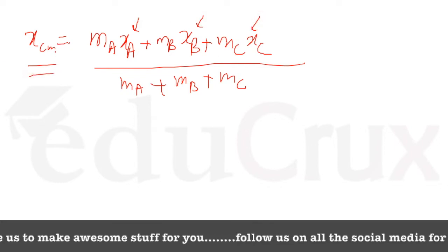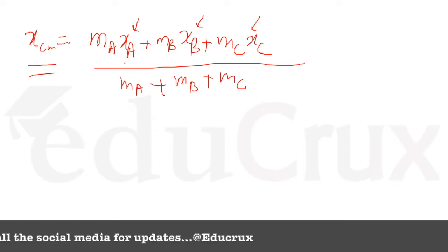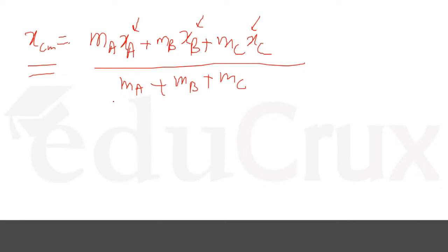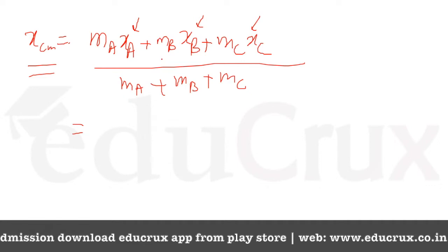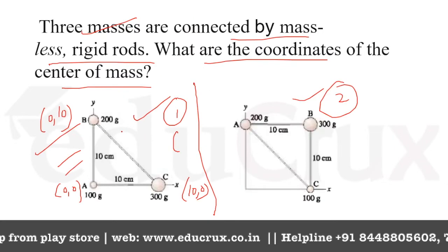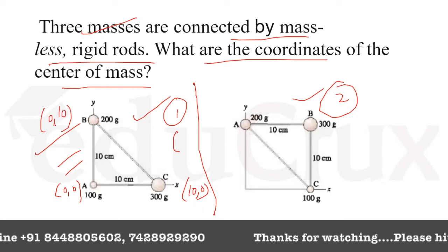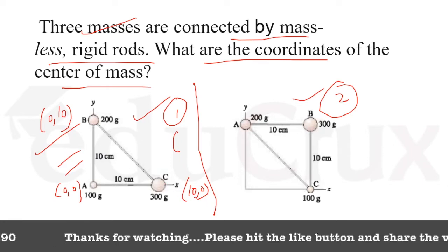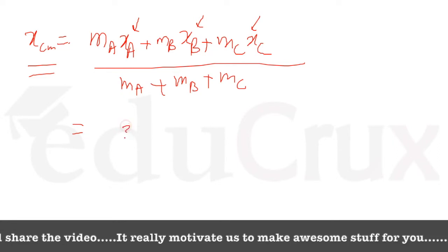For the position coordinates, if we put x_A, x_B, x_C in centimeters then X_cm will come out in centimeters, or in meters if we use meters. Now substituting: x_A is 0, x_B is also 0, and x_C is 10. So the first two terms are zero.